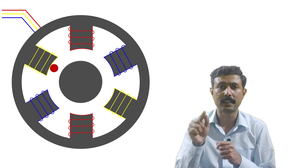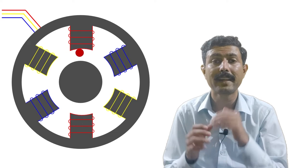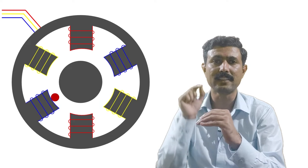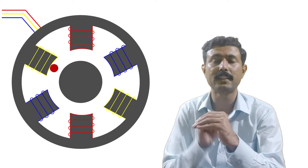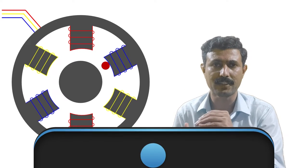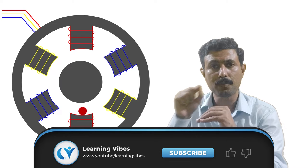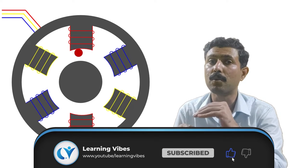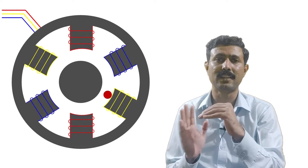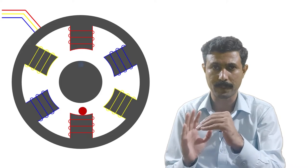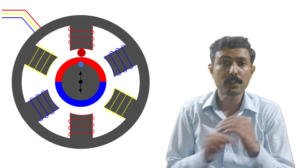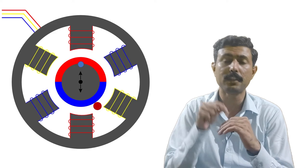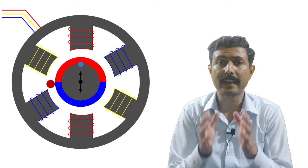At the instant we turn on the supply, we start getting the rotating magnetic field, but at that instant the rotor is still standstill — it has not started moving because of its inertia. So we are getting a rotating magnetic field, but the rotor is still not moving. Because of this rotating magnetic field, an EMF is induced into the rotor as per Faraday's law of electromagnetic induction.